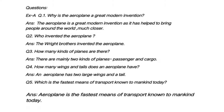Now let us see the next question: how many kinds of planes are there? There are mainly two kinds of planes — passenger planes and cargo planes. You can write this answer: 'There are mainly two kinds of planes, passenger and cargo.' The next question is: how many wings and a tail does an aeroplane have? An aeroplane has two large wings and a tail.